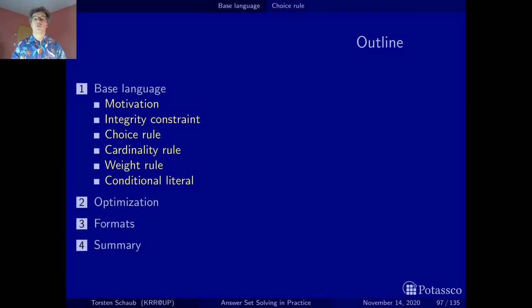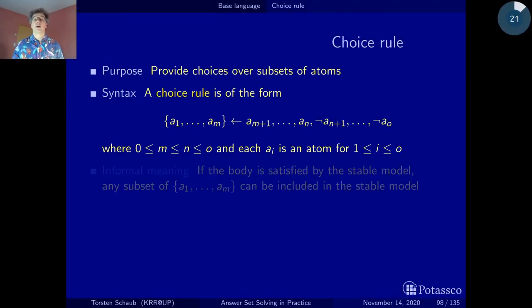The purpose of these types of choice rules is to provide choices over subsets of atoms. These are really the most pure choice rules. There are no cardinality constraints on the set - no lower bound, no upper bound, just choices.